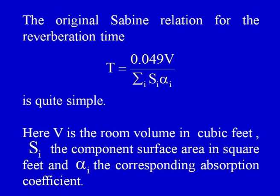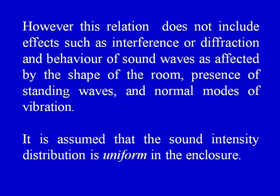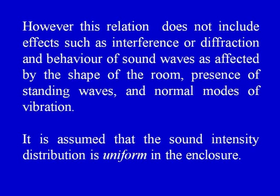The original Sabine relation for the reverberation time is: t = 0.049 V / (Σ Sᵢ αᵢ), where V is the room volume in cubic feet, S is the component surface area in square feet, and α is the corresponding absorption coefficient. However, this simple relation does not include effects such as interference, diffraction, behavior of sound waves as affected by the shape of the room, presence of standing waves, and normal modes of vibration. It is also assumed that the sound intensity distribution in the room is uniform.